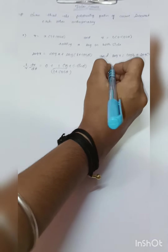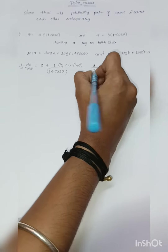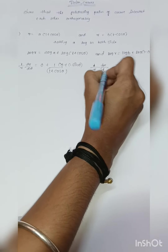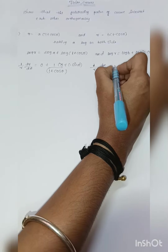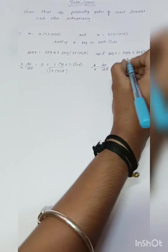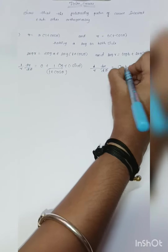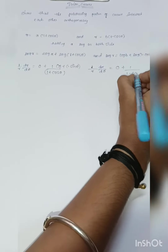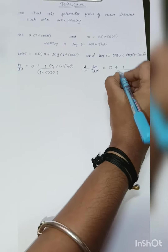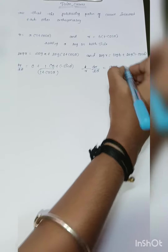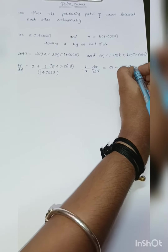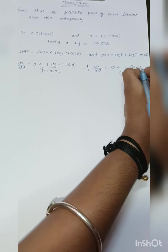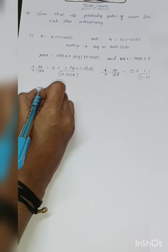And for the second curve, log r differentiation gives 1/r times dr/d theta equal to 0, and for log of (1 minus cos theta), that is 1 over (1 minus cos theta), times the differentiation giving minus sin theta.